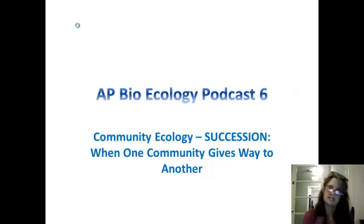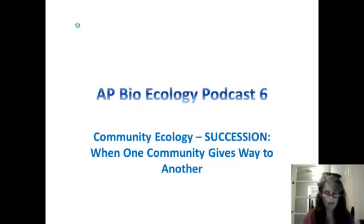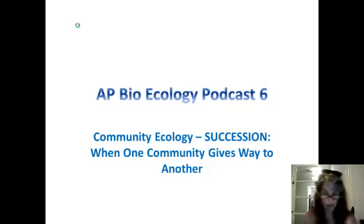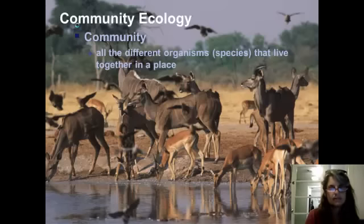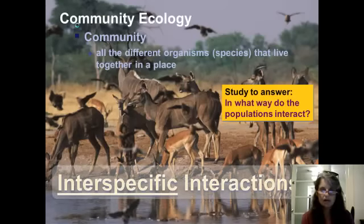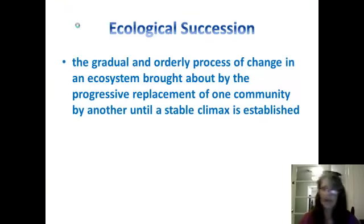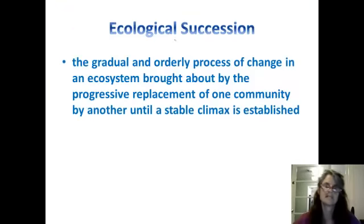Succession is a process that occurs over time, when one type of community in an area gives way to a different type of community in that same area over time. So community ecology involves interspecific interactions, meaning interactions between different species. And what we're going to specifically focus on here is this idea of ecological succession.